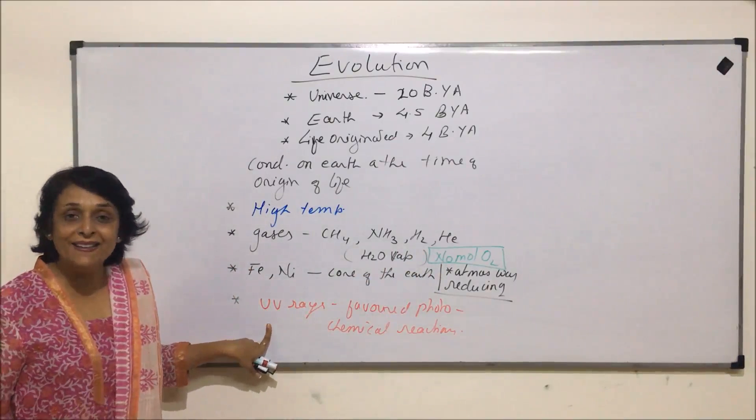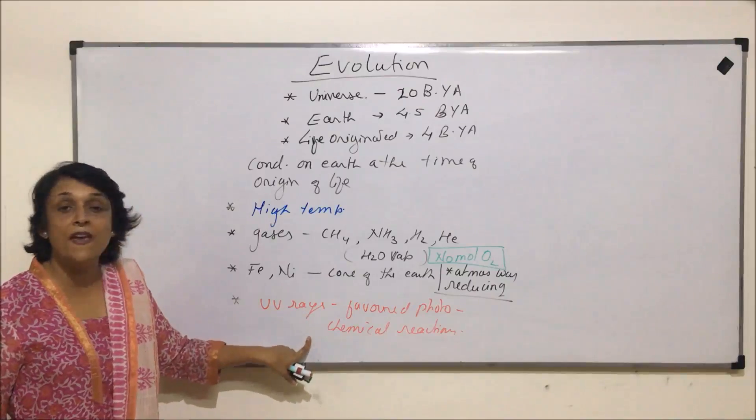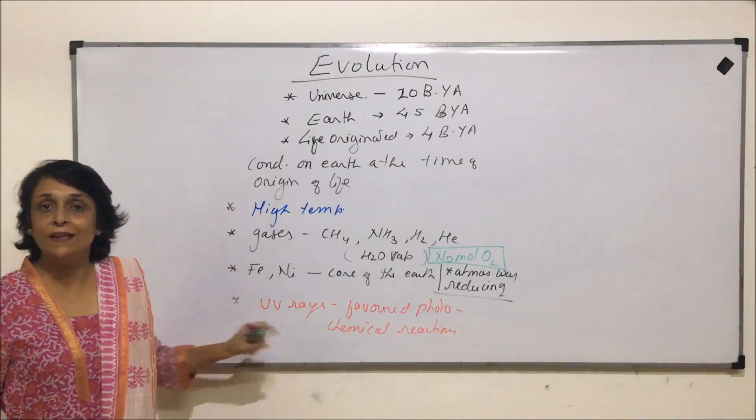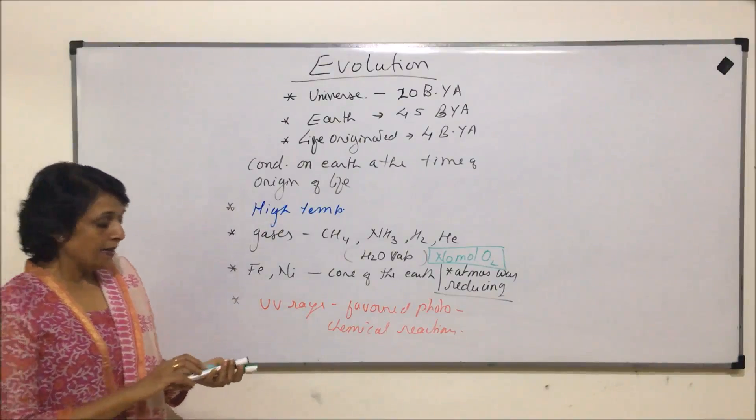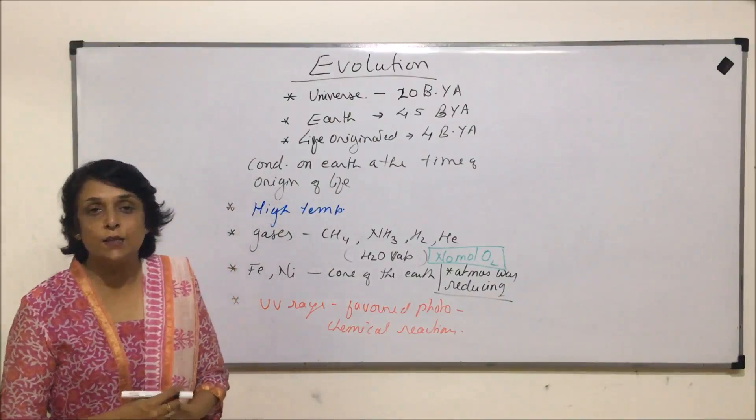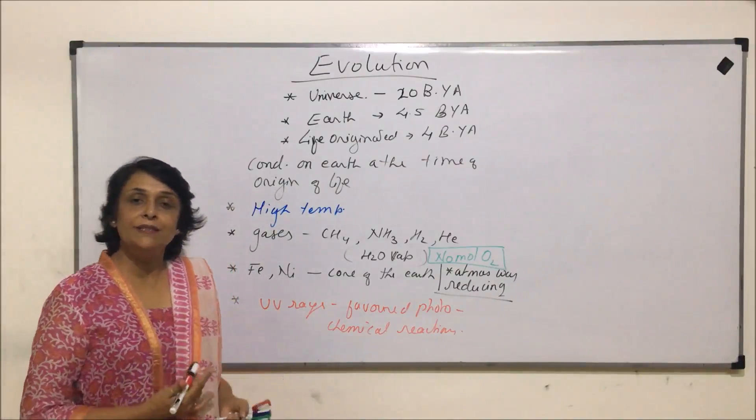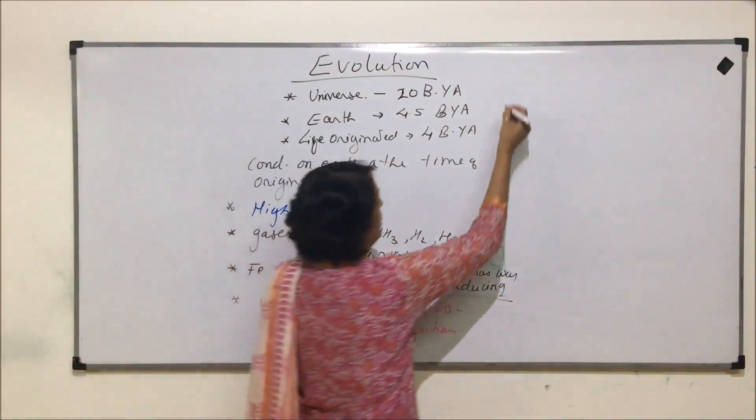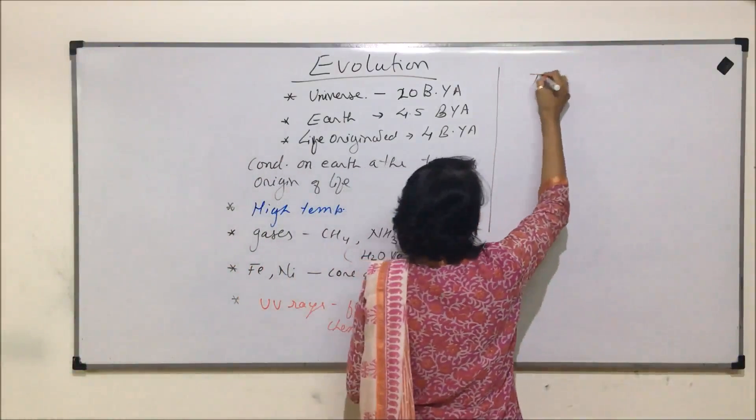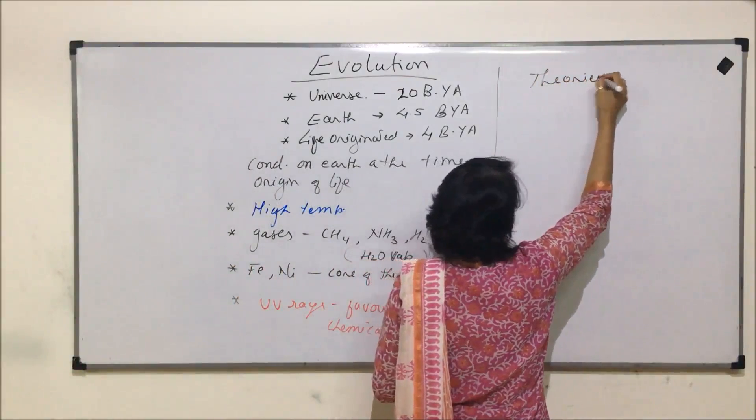Heavy elements form the core of the earth. Ultraviolet radiations were present in the form of energy-giving radiations and they favored photochemical reactions. Let us talk about the theories which are commonly discussed when we talk of origin of life. So here we are talking of theories of origin of life.